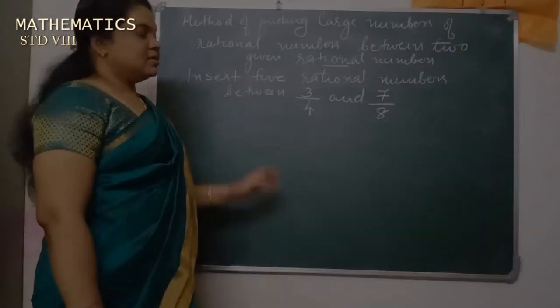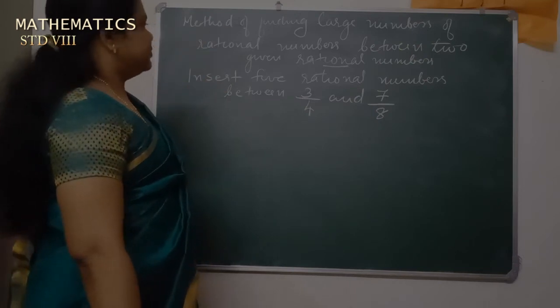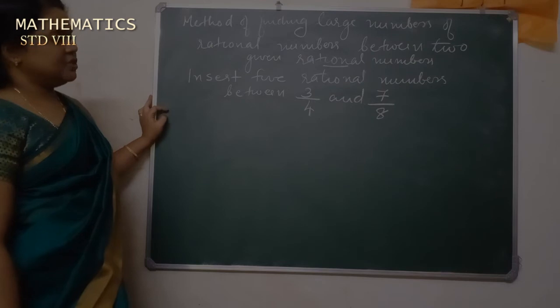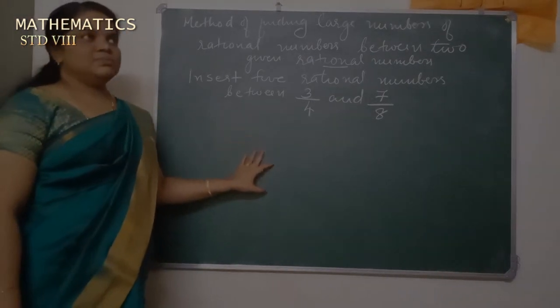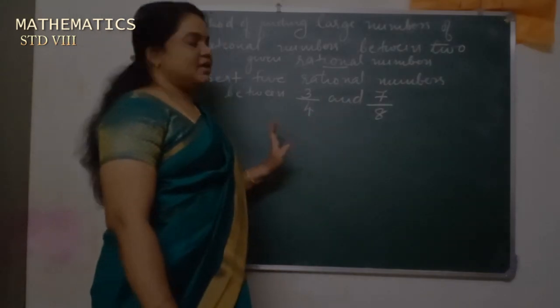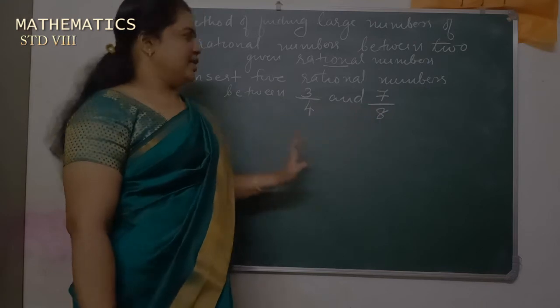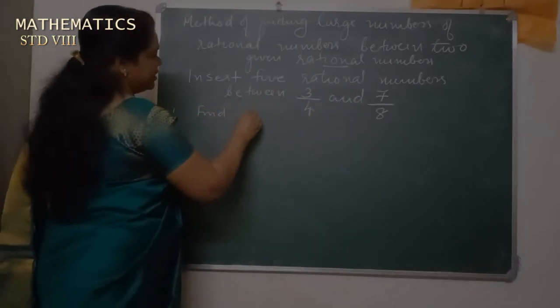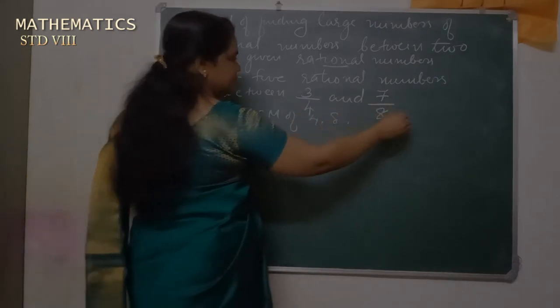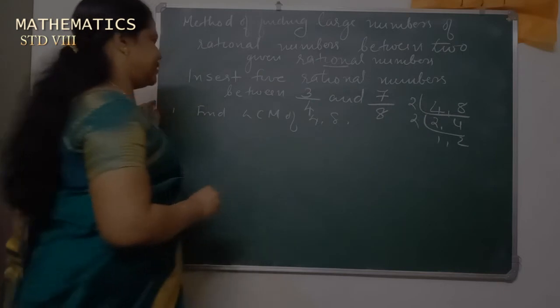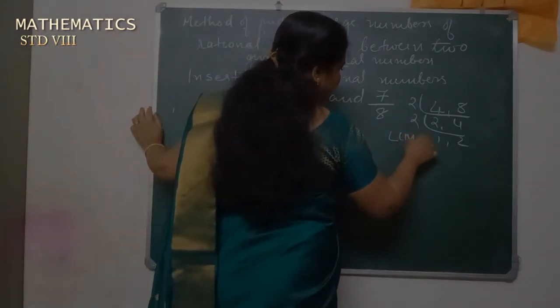The next sub-topic is the method of finding a large number of rational numbers between two given rational numbers. Here we have two rational numbers: 3 by 4 and 7 by 8. How can we find five rational numbers between 3 by 4 and 7 by 8? The first step is to find the LCM of 4 and 8. The LCM of 4 and 8 is 8.